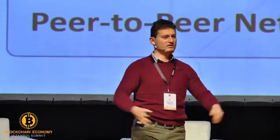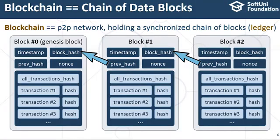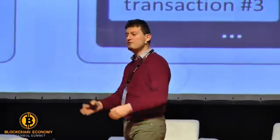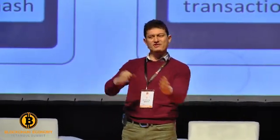All nodes hold the same state — this was the initial idea of Satoshi Nakamoto and Bitcoin. The blockchain is generally a peer-to-peer network holding a synchronized chain of blocks, also called a decentralized ledger. We have block zero — the genesis block, the birth block of the blockchain — and subsequent blocks cryptographically connected to each other, holding transactions such as money transfers or token transfers.